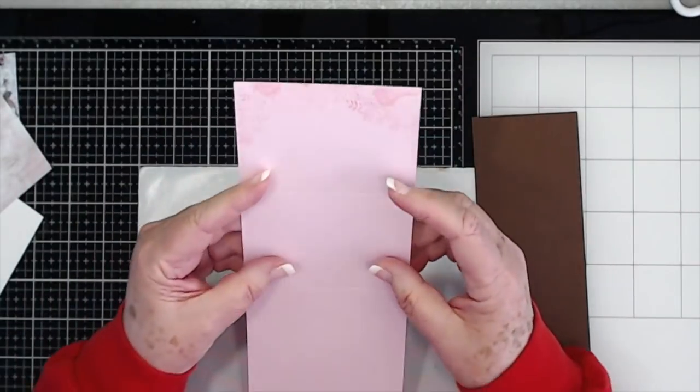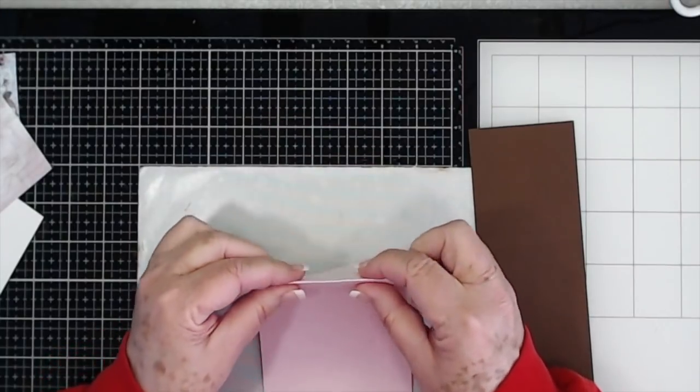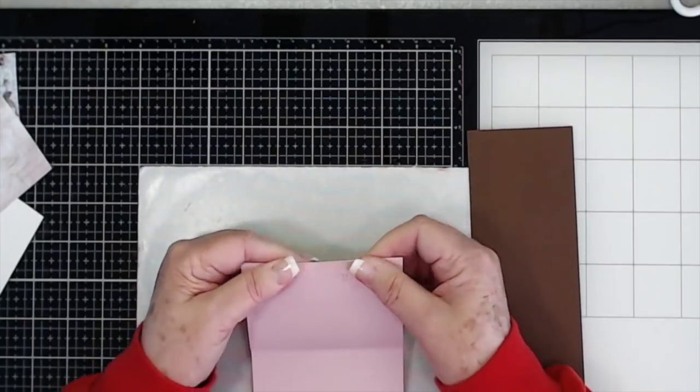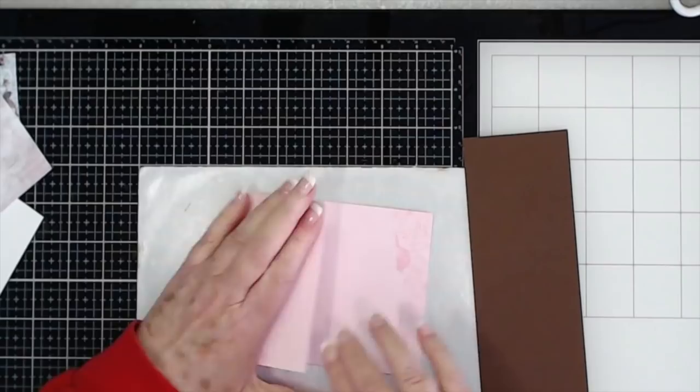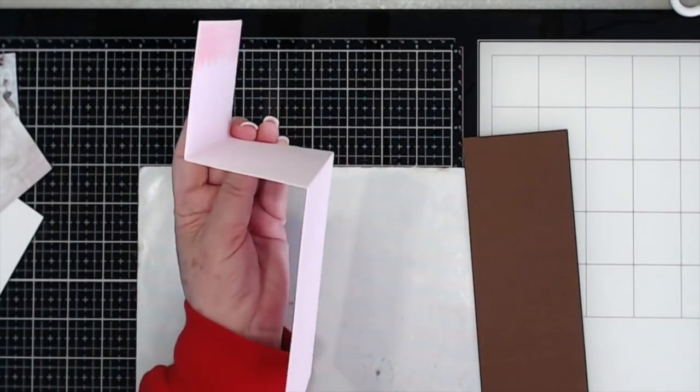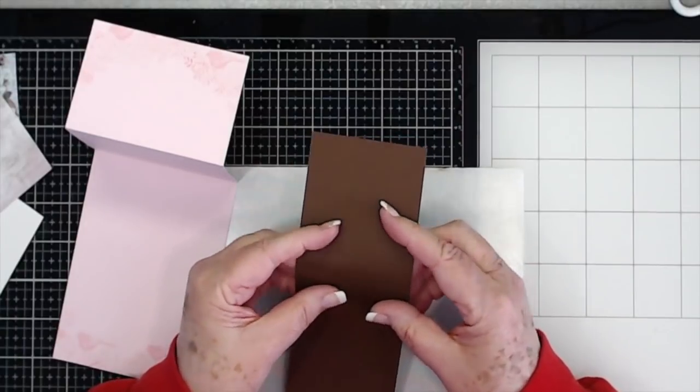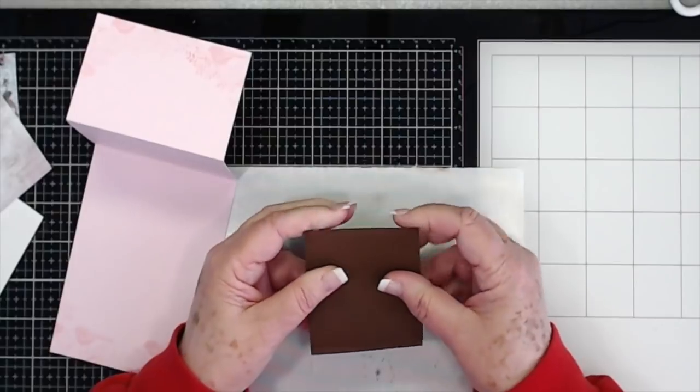Right now you're just going to fold this one back and then this one you're going to fold forward just like that. Okay, so that's the way that's going to look, a little z-fold. And then you're going to fold that one back and then that one up just like that.